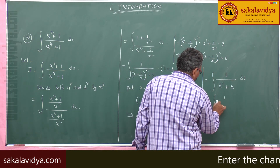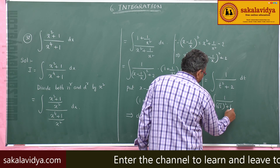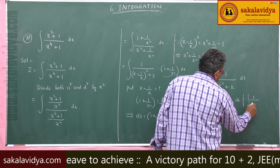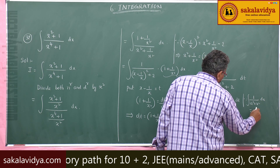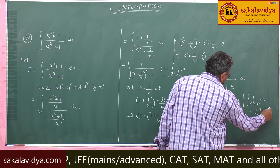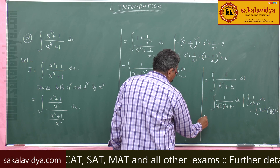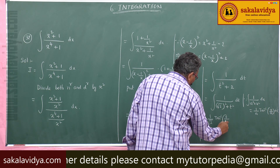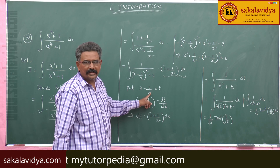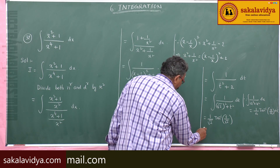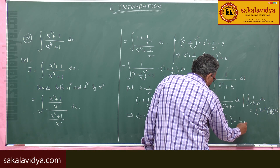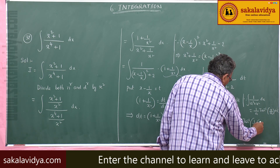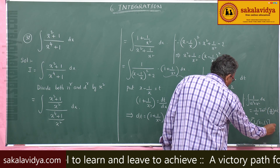This is in the form of 1 by a square plus x square. So integral of 1 by root 2 square plus t square dt. We can apply the formula: integral of 1 by a square plus x square dx equals 1 by a times tan inverse x by a. So this equals 1 by root 2 tan inverse t by root 2. But t is x minus 1 by x. So we get 1 by root 2 tan inverse of x minus 1 by x divided by root 2, plus constant of integration.